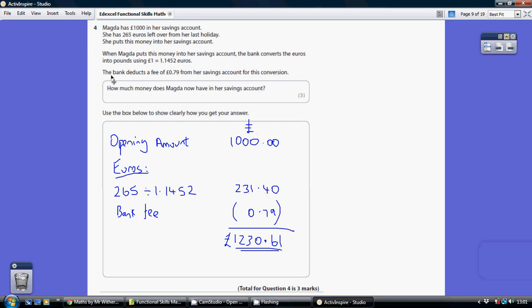However, we do just have to note that when she does that conversion, there is a fee, there is a cost of 79 pence. So we have to take that away from the amount that goes into our savings account.